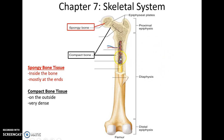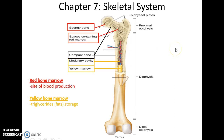Within the open space of the spongy bone is red bone marrow that produces all blood cells. Within the diaphysis, you have an open space called the medullary cavity, and within the medullary cavity is yellow bone marrow, which is a site where triglycerides or fats are stored.